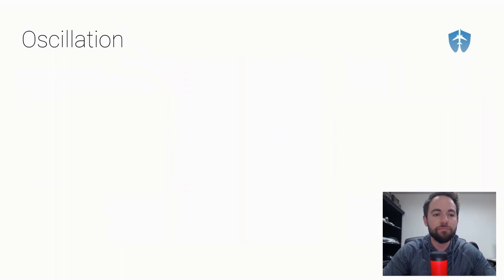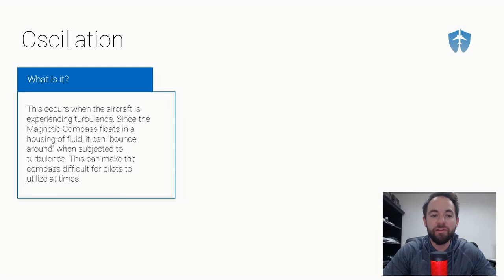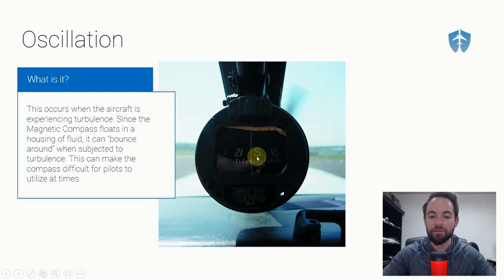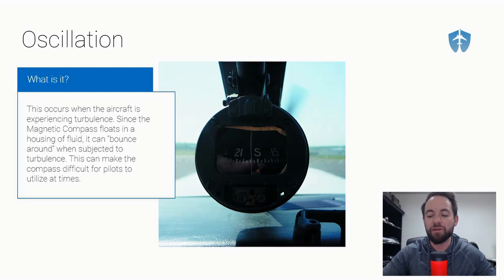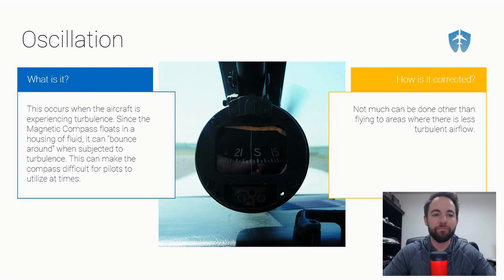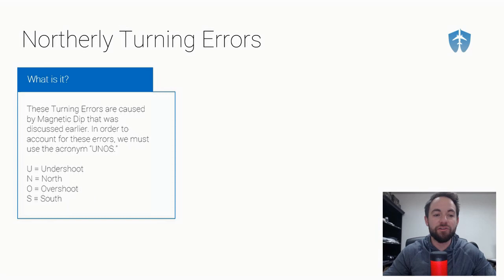Oscillation is our next error and it's very simple. This occurs when the aircraft is experiencing turbulence. Since the magnetic compass floats in a housing of fluid, when you're in turbulence the compass can bounce around inside that fluid and housing, making it difficult for pilots to read their heading — especially in heavy turbulence. There isn't much that can be done about it other than flying to areas of less turbulent airflow, or using GPS, VOR, or other navigation aids instead of the compass.